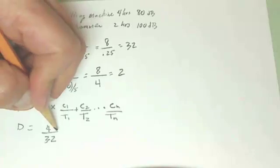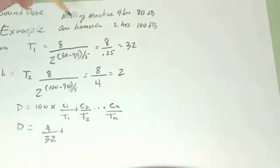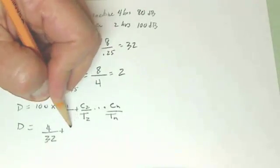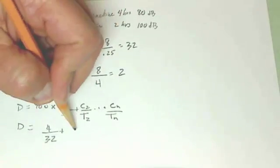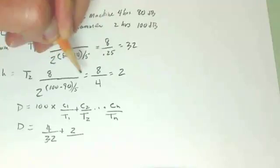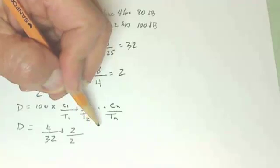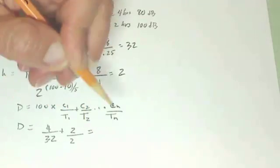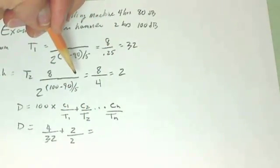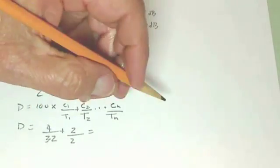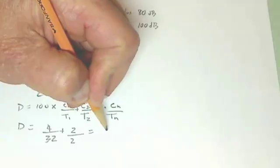So in this case, D is equal to C1, the duration is 4 hours, divided by what we calculated for T1, which is 32, and then that's going to be added to T2 here, which is 2, so that's the time is 2. We also calculated that T was 2. So we have 2 over 2 and we have 4 over 32.